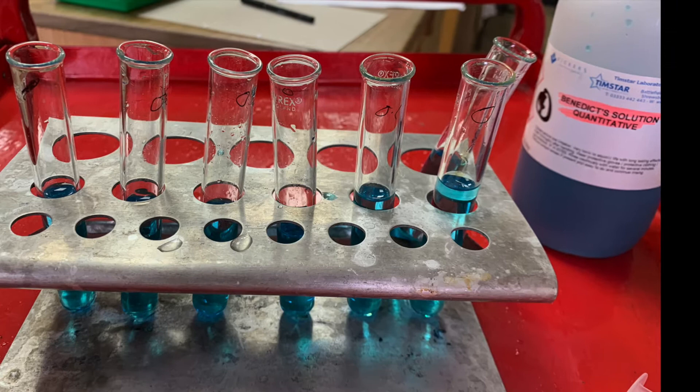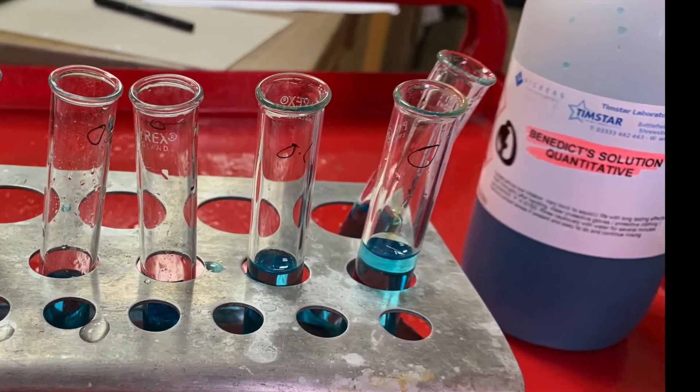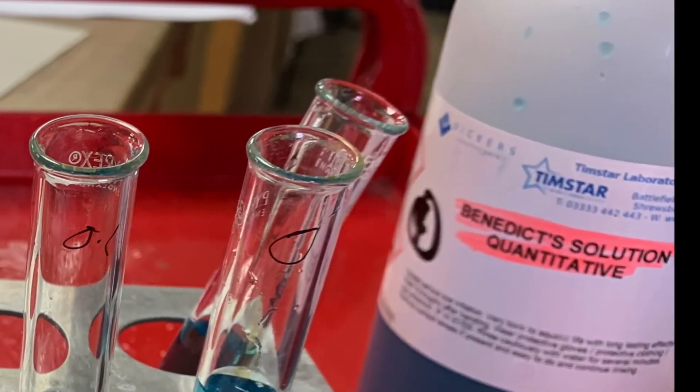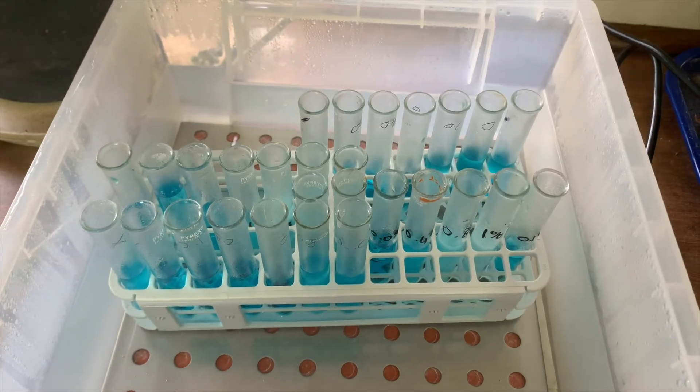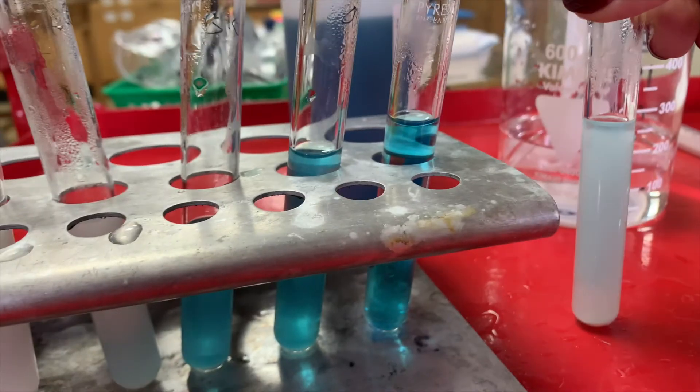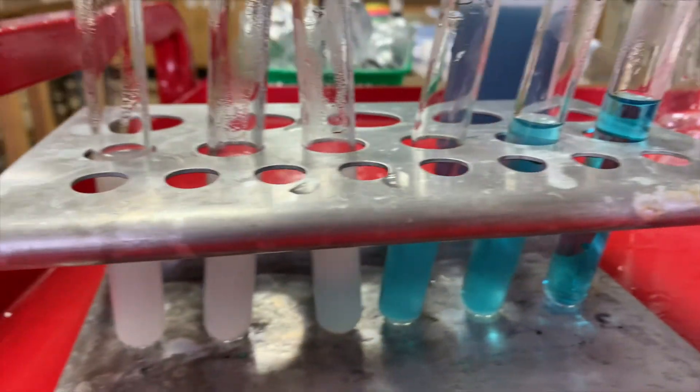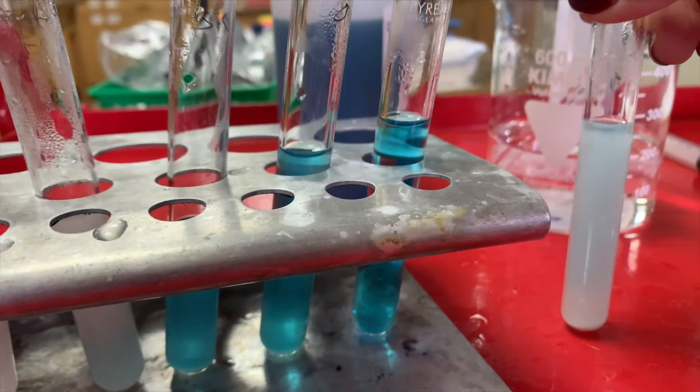Then add 3 centimeter cubed of the quantitative Benedict's reagent to each tube. Place all seven boiling tubes into the boiling water bath and leave for five minutes. Then remove the boiling tubes from the water bath and stand them in a rack to cool.